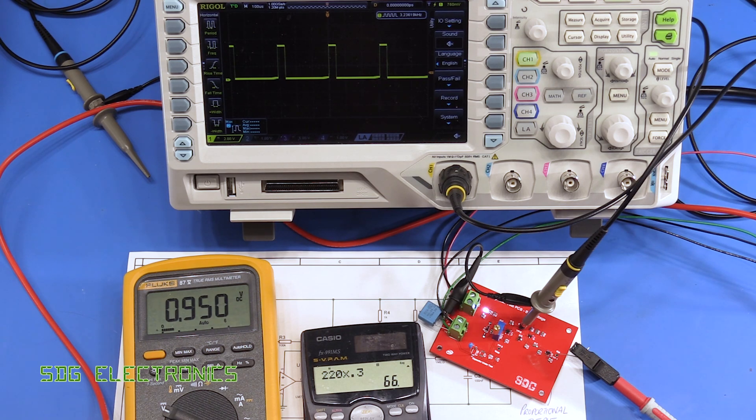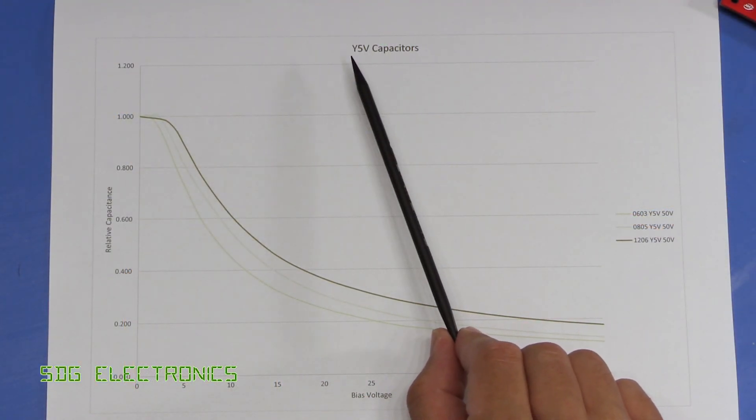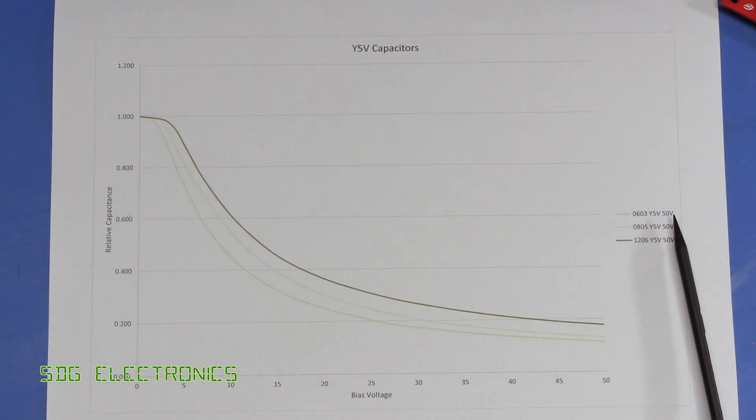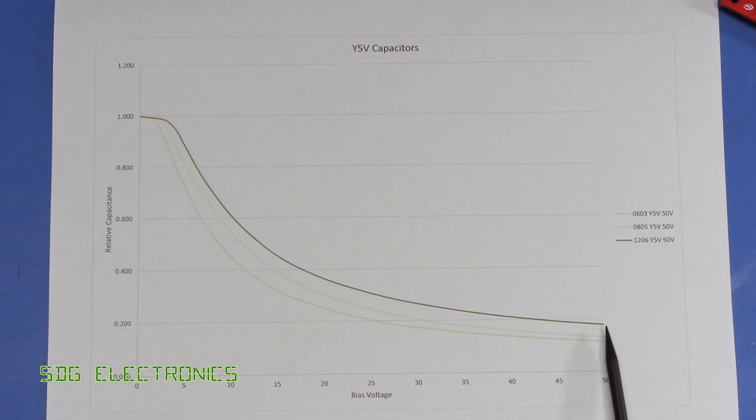So what I've done is I've tested a whole range of different capacitors and then logged all of the results. First of all we've got the Y5V dielectric capacitors. They're all 50 volt, 100 nanofarad capacitors. The only difference here is the case sizes.